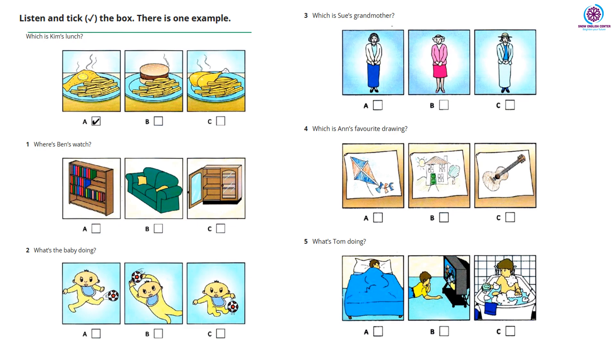Five: What's Tom doing? Where's Tom? Is he watching TV? No, Nick is watching TV. Tom isn't. Oh, is he having a bath then? No, Tom's in bed. He's sleeping.